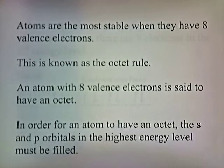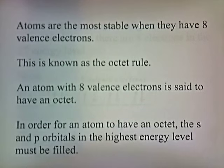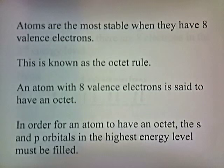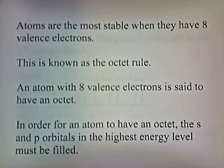Atoms are the most stable when they have eight valence electrons, and this is known as the octet rule. An atom with eight valence electrons is said to have an octet. In order for an atom to have an octet, the S and P orbitals in the highest energy level must be filled.